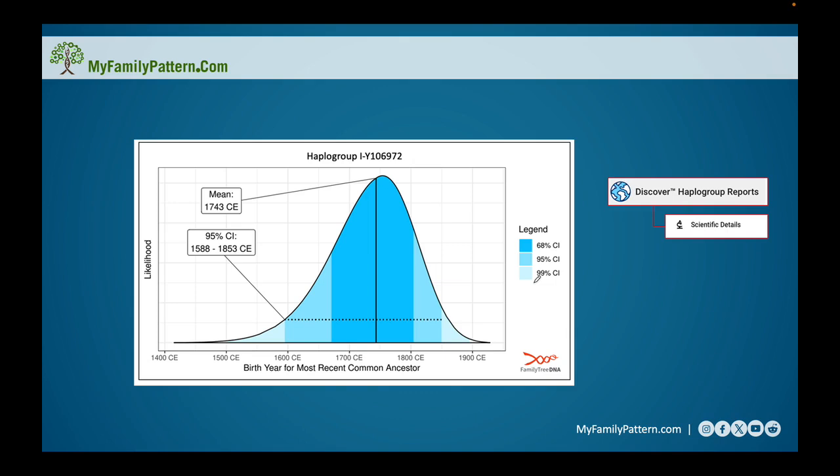It is called the scientific details, and it's also part of the haplogroups report. So again, this is my haplogroup here as we've indicated. I also showed on the previous screen that the mean was expected to be 1743 of when that ancestor was born.